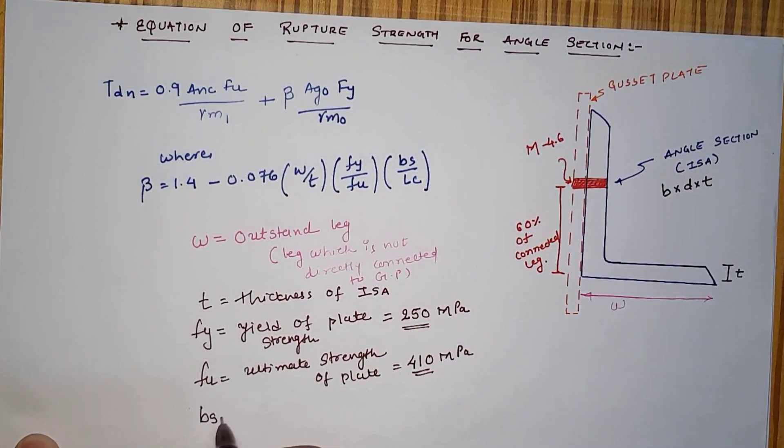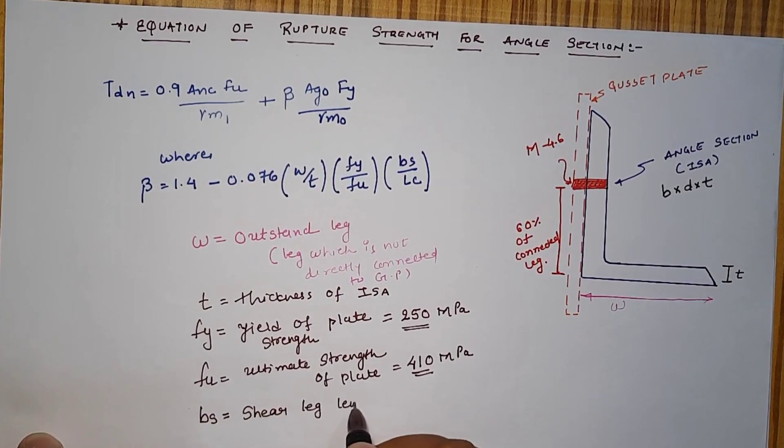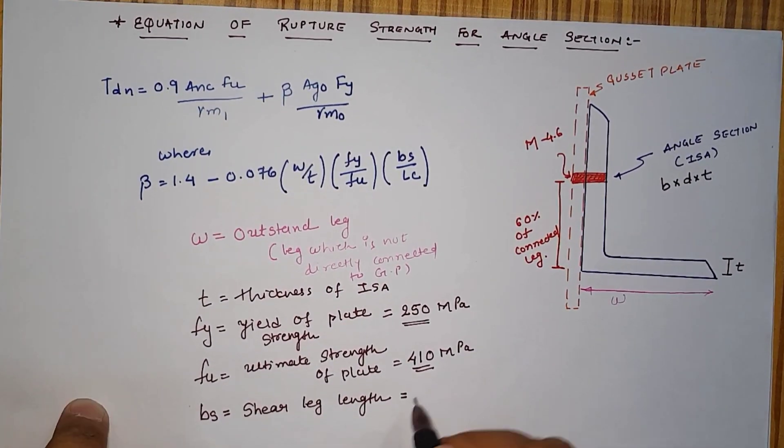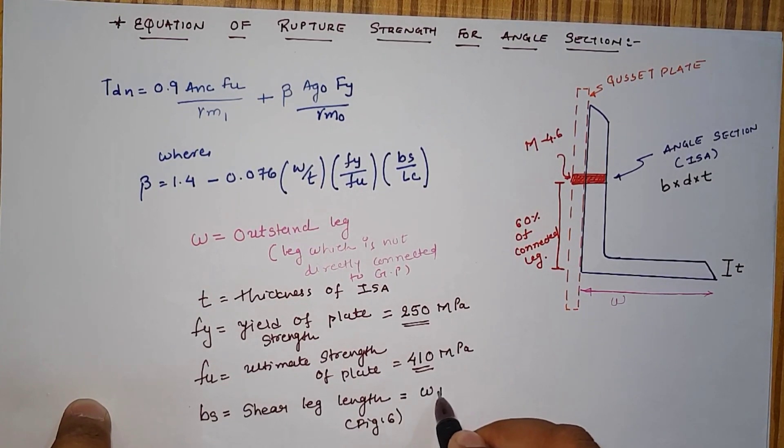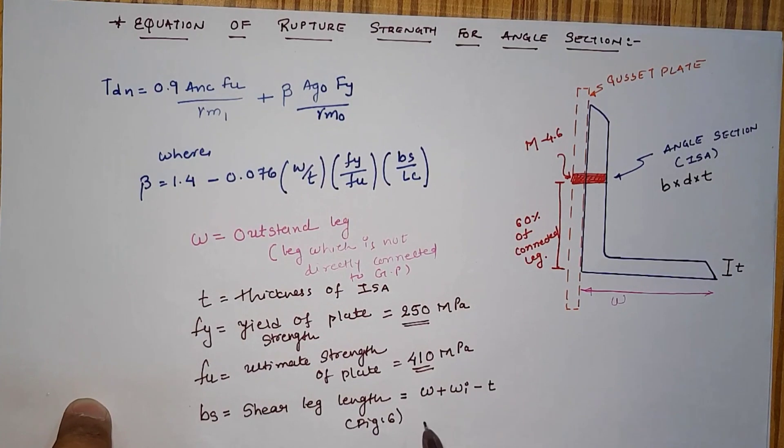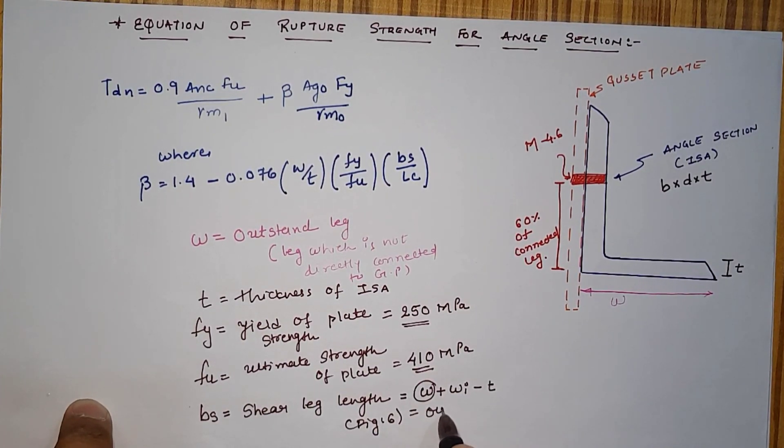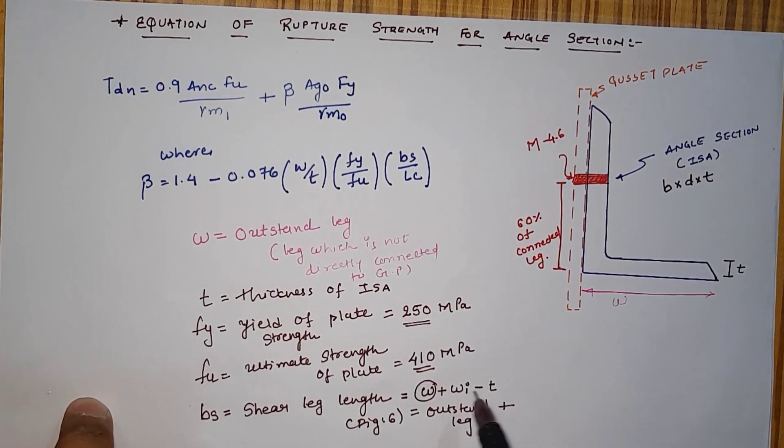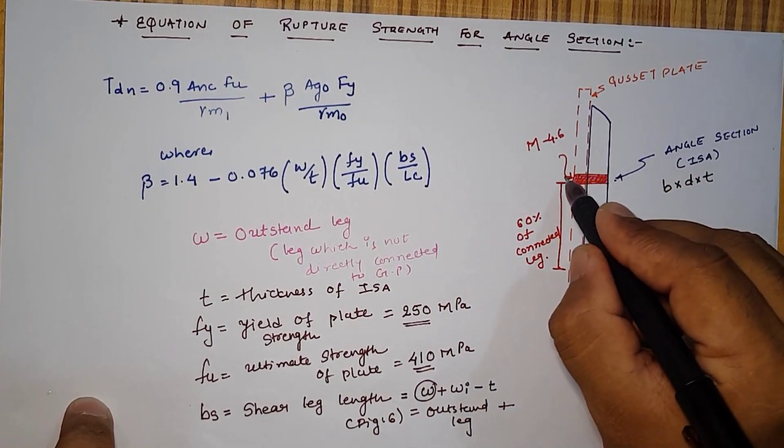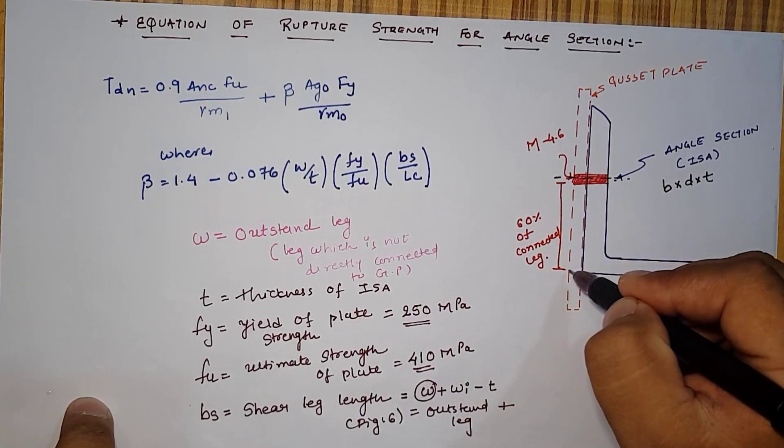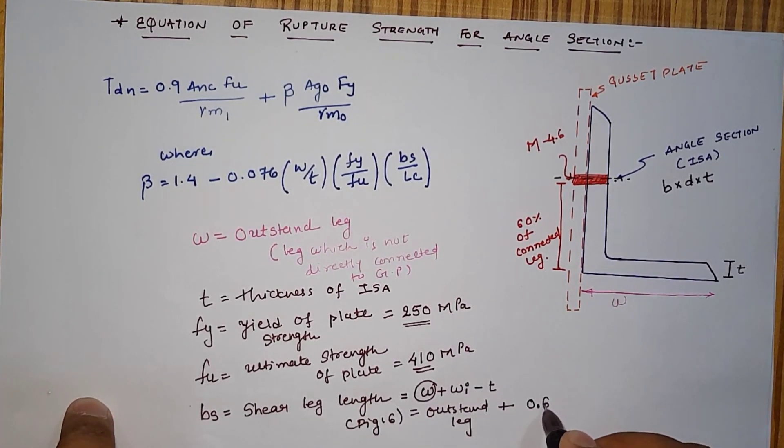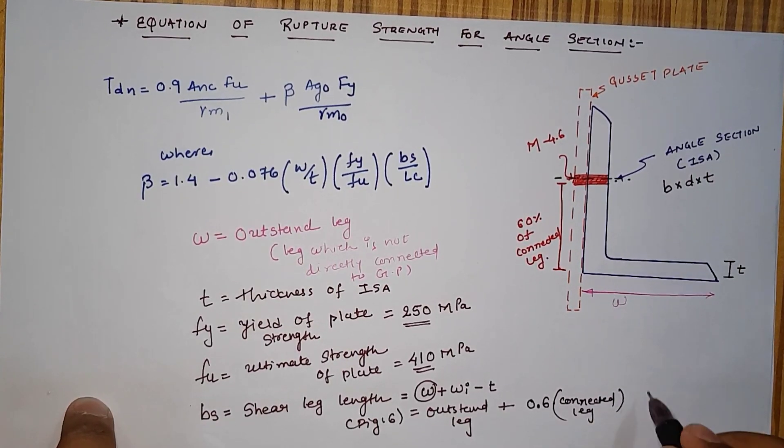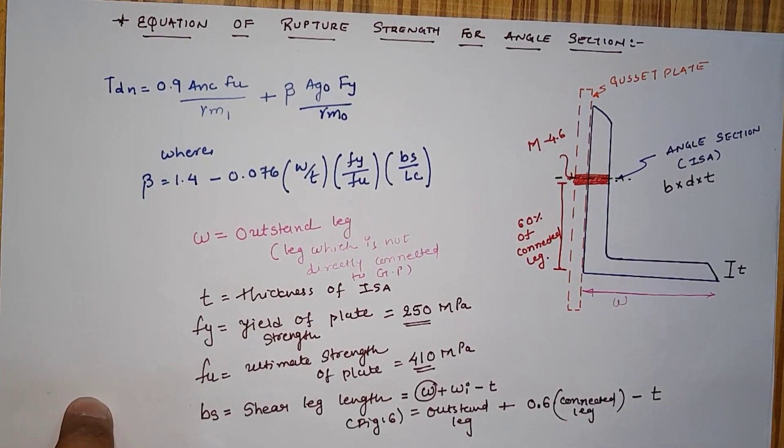Now BS, according to figure number 6 on same page, is indicated as W plus Wi minus T. W is nothing but our outstand leg plus Wi means distance of center of the bolt to the outstand leg.